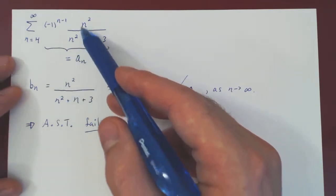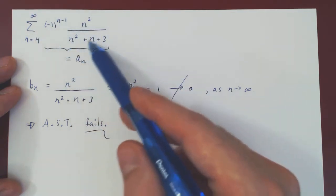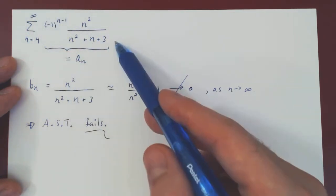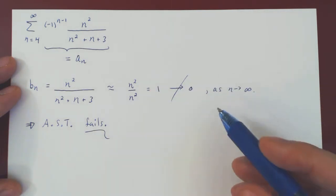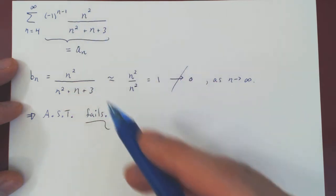And so, because an does not converge to zero, the terms we are summing over are not getting small enough, so we have to have divergence by the divergence test. So, let's now show this properly.